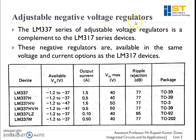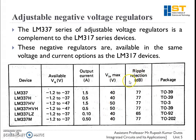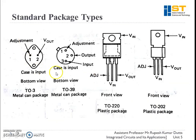Adjustable voltage regulators are also available in the LM337 series, which is similar to the LM317 series but provides negative output voltages. These negative regulators are available in the same voltage and current options as the LM317 devices. The table shows the available output voltages, output currents, input voltages that must be applied, and ripple rejection obtainable with these packages. These also come in metal can and plastic package types.